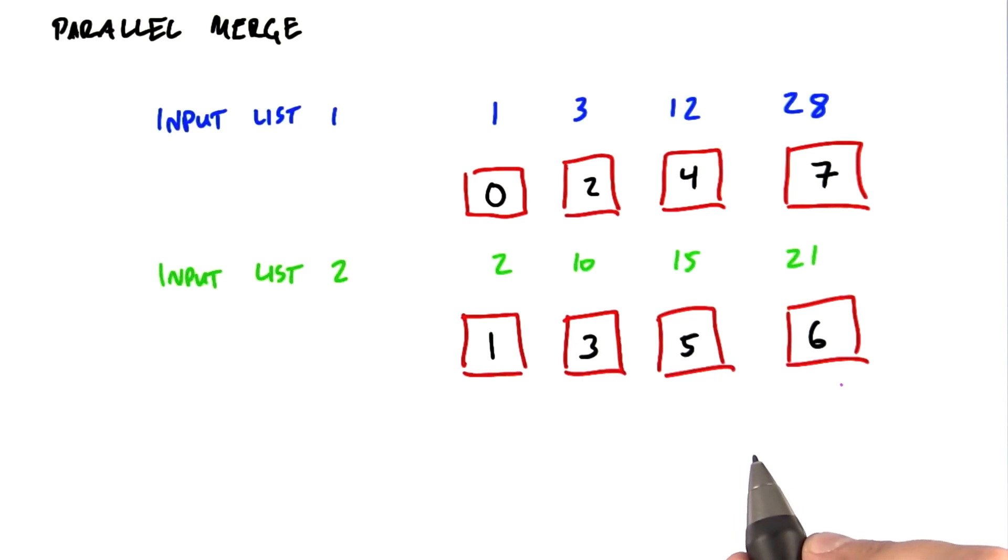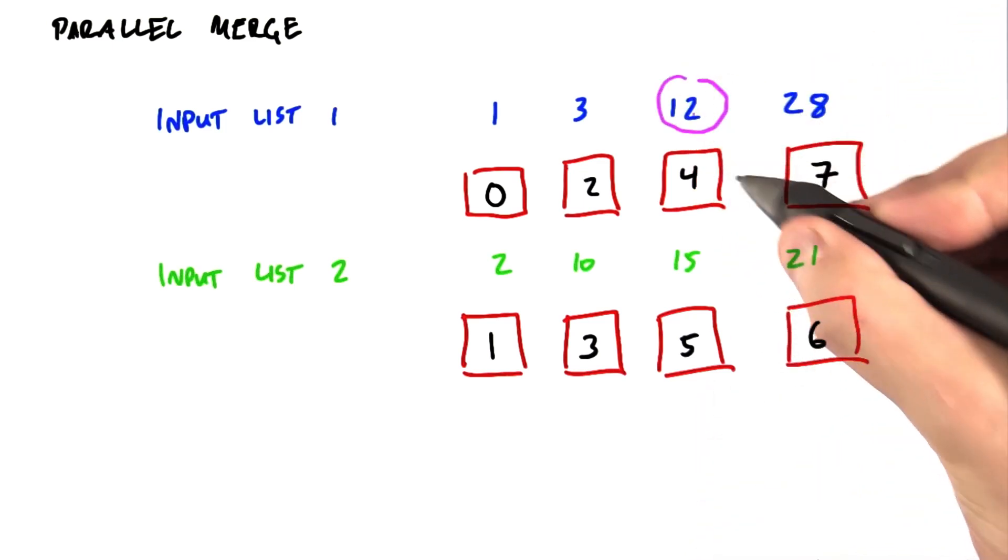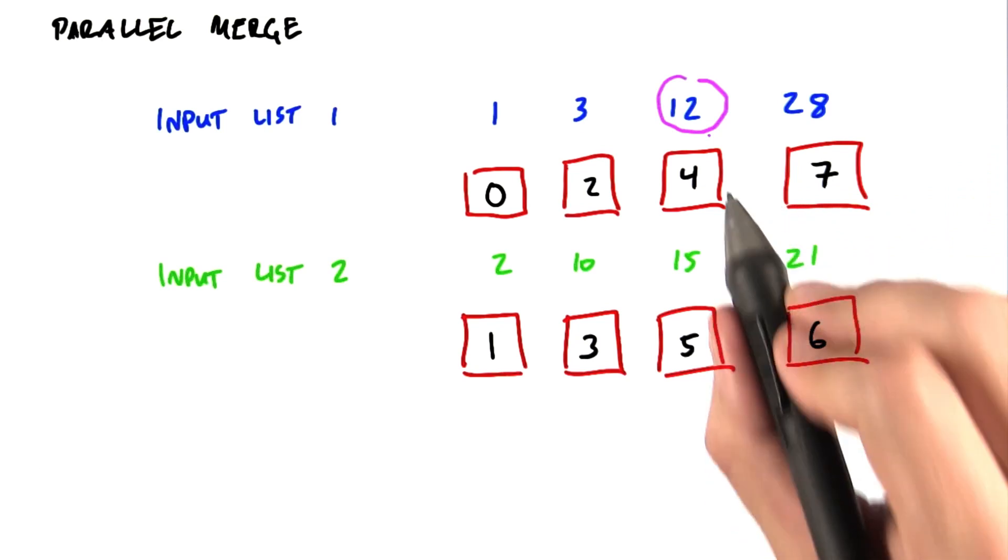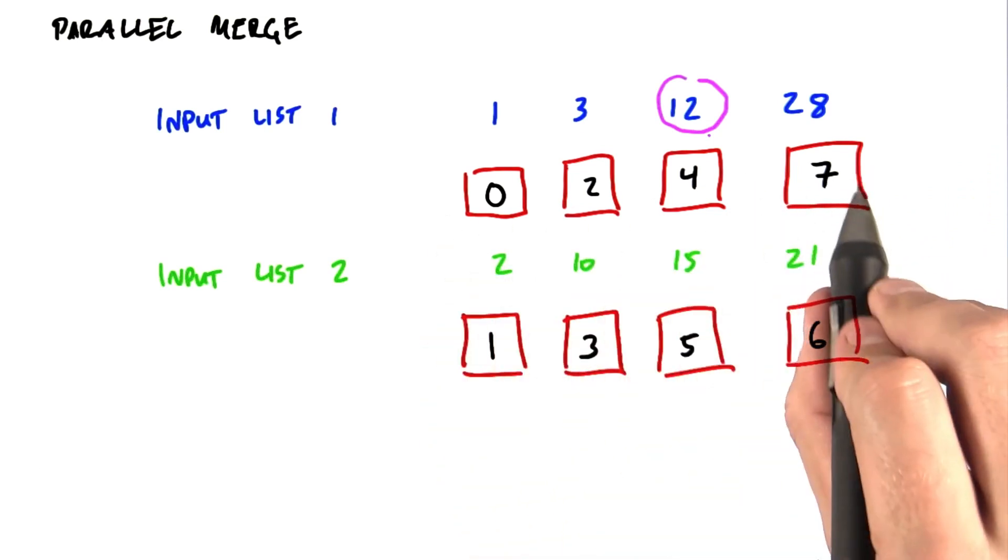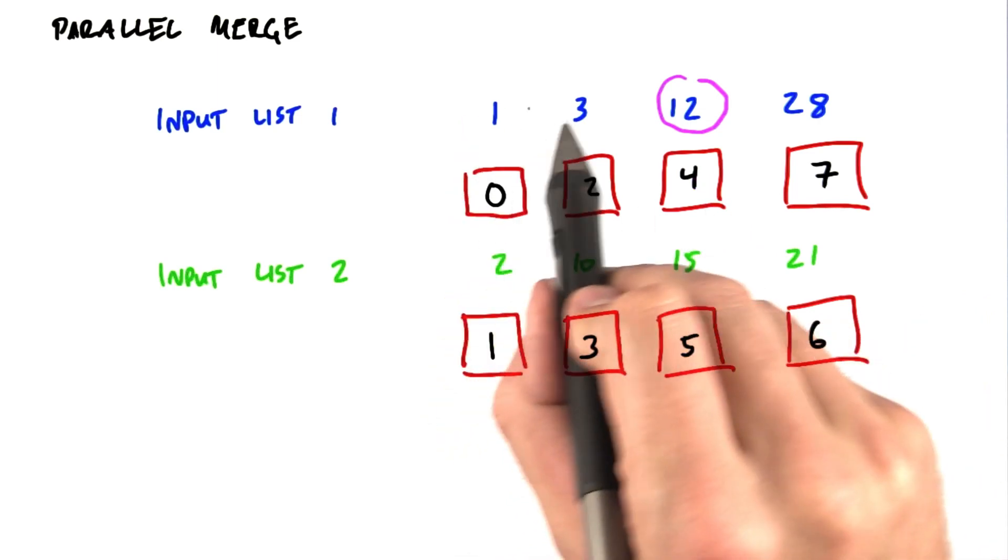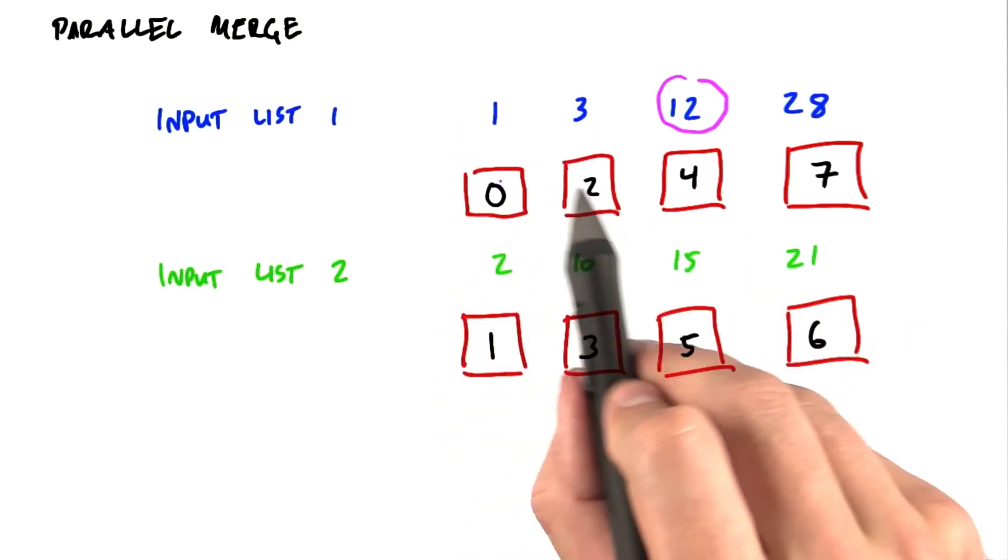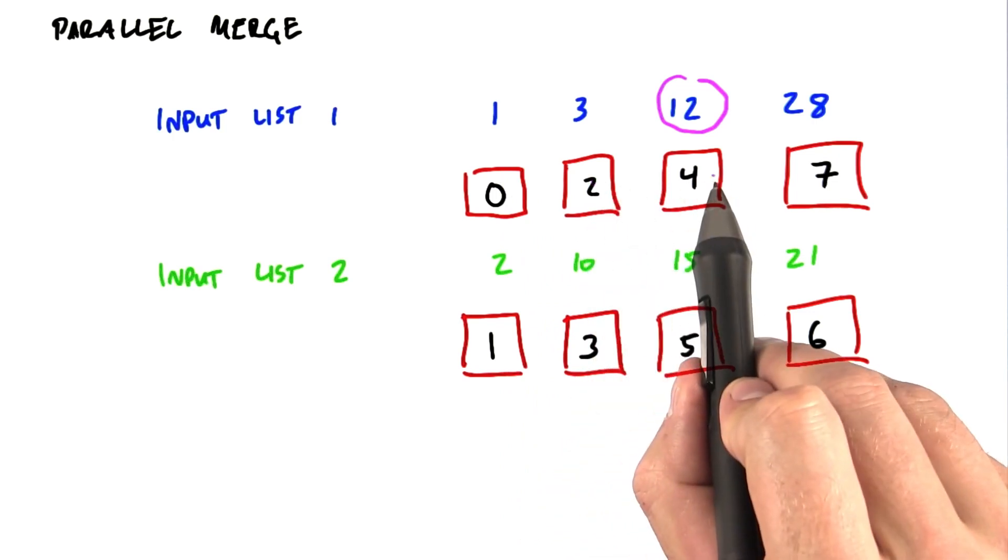We're going to put ourselves in the mental position of one of these elements in the first list. So we're going to pick this particular element right here. And we're going to say, hey, what position am I in my own list? Well, I'm at position 2 because there are two elements in front of me in my list. So he would be at position 0, he would be at position 1, and I'm at position 2.